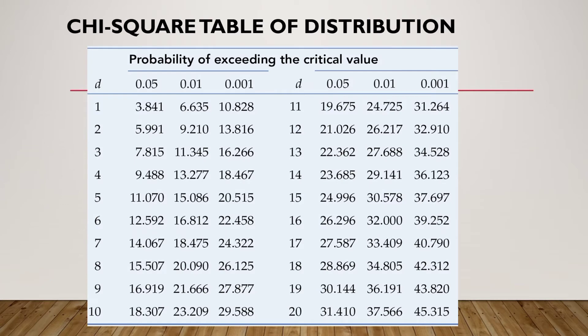We have here a chi-square table of distribution. This is the probability of exceeding the critical value, with 0.05, 0.01, and 0.001 as the levels of significance — the alpha. D is the degree of freedom. We're going to solve for the degree of freedom later and then refer to this chi-square table of distribution.